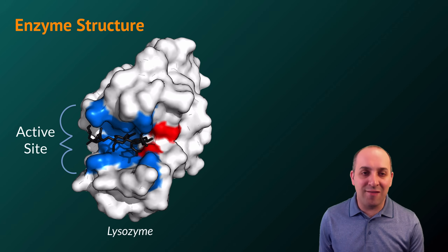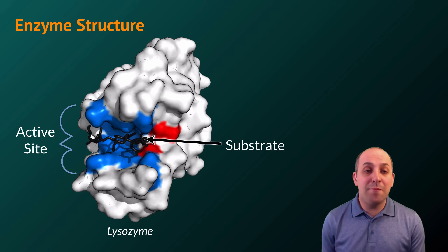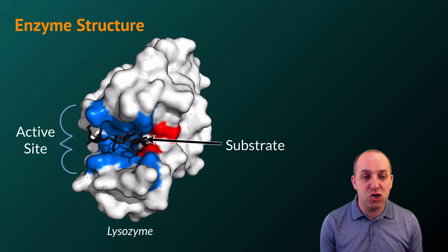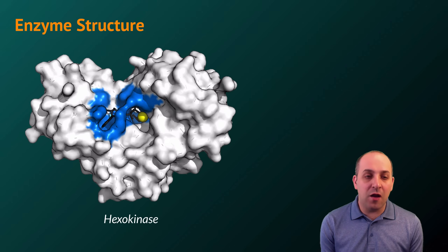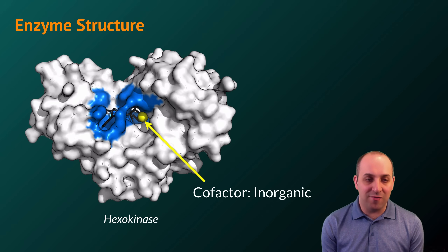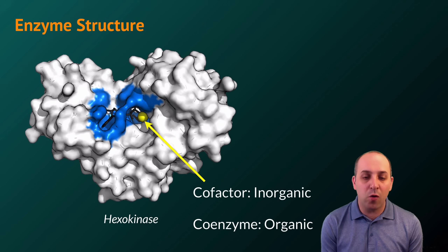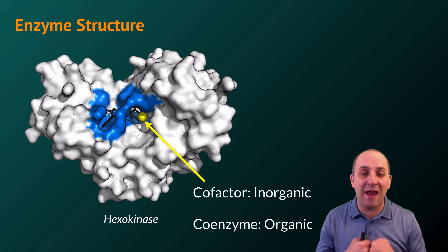The active site is the area of the enzyme that will interact with whatever molecules participate in the reaction. The molecules that participate in the reaction are referred to as the substrate. Notice that most of the enzyme is not actually interacting with the substrate — it's only the active site region that directly participates. Most enzymes also need additional molecules to be functional. These can be cofactors, like a metal ion, or organic molecules like various vitamins, which we would refer to as coenzymes. It's the physical association of the substrate and the enzyme that leads to catalysis.